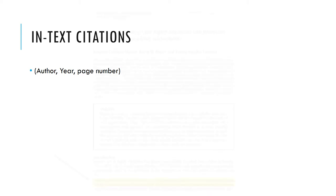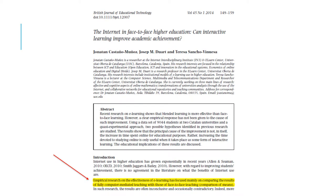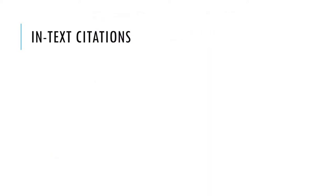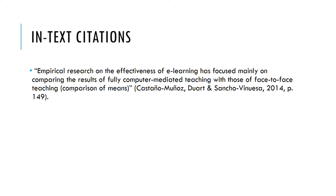Here's an example. Say you wanted to use this quote from this article in your paper. At the end of the quote you would put the author or authors' last names, the year it was published, and the page number that the quote is from, all in parentheses. The period always goes after the parentheses. Putting your in-text citation right after the quote or paraphrase helps direct your reader to your references page so they can find that information easily.